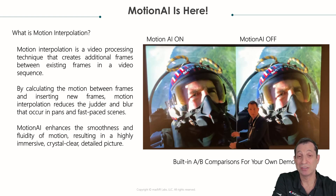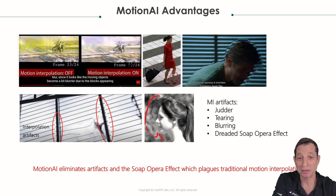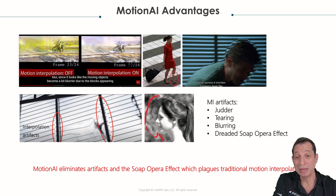The other problem is that dreaded soap opera effect, where the image no longer looks cinematic. So we set out to create the world's first AI-based motion interpolation in a dedicated video processor. As we like to say, we didn't create motion interpolation — we're simply trying to be the first to perfect it.